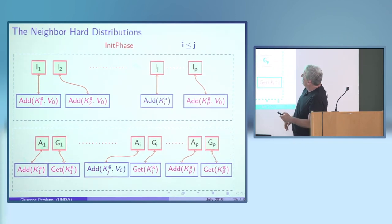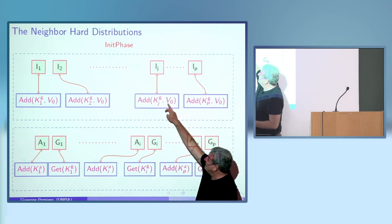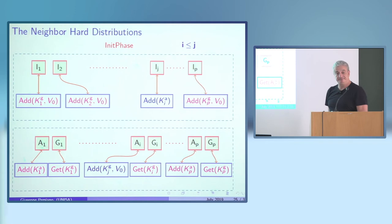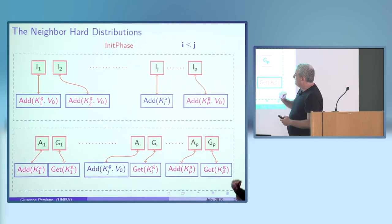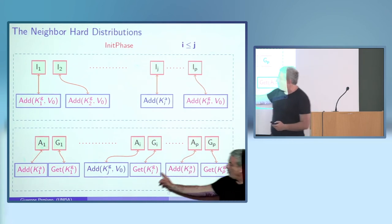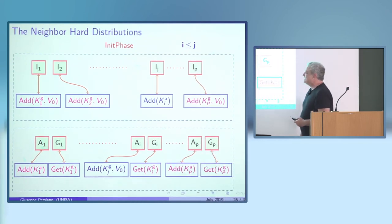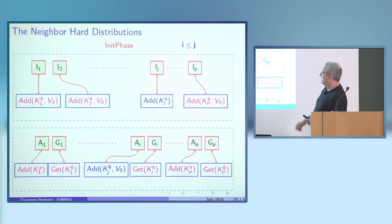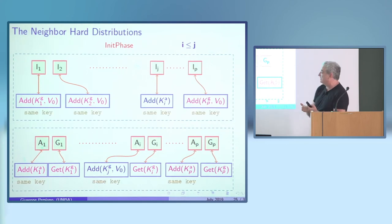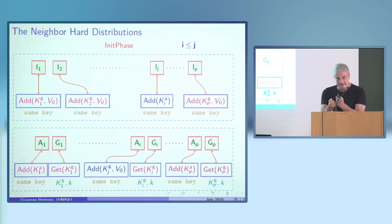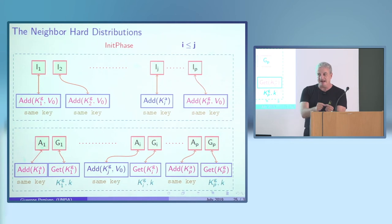The neighbor hard distributions are obtained by switching values i and j from the initial phase: this one goes here and that one goes there. You can see that all values the get operations should receive are determined here, and the node should be able to extract all the entropy. The crucial technical point is that this switch preserves the leakage — designing the hard distribution and neighbor distributions to have the same leakage.